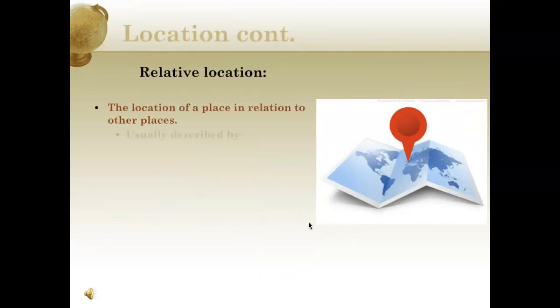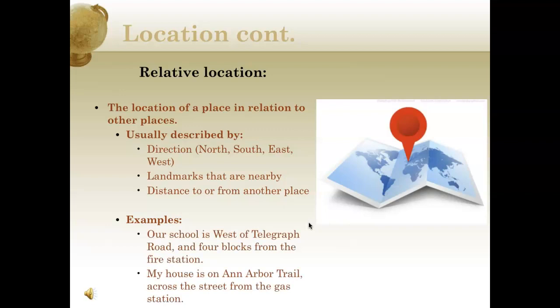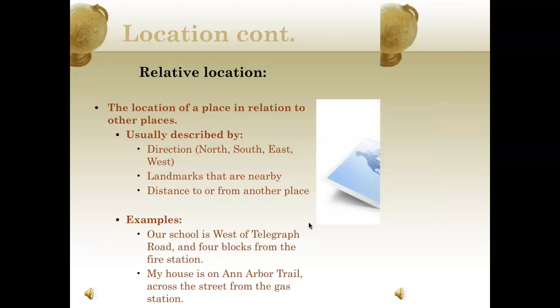When we look at location from a relative construct, the location of a place in relation to other places can be helpful. It's usually described with directions like north, south, east, west, landmarks that are nearby, and distance to or from other places. For example, our school is west of Telegraph Road and four blocks from the fire station, or my house is on Ann Arbor Trail across the street from the gas station. Those things can really help people get a general sense of where you're talking about.